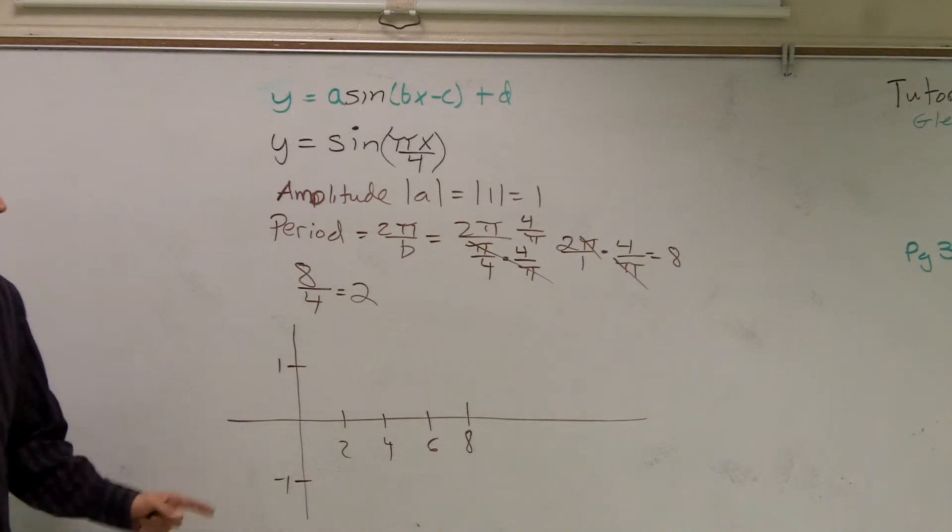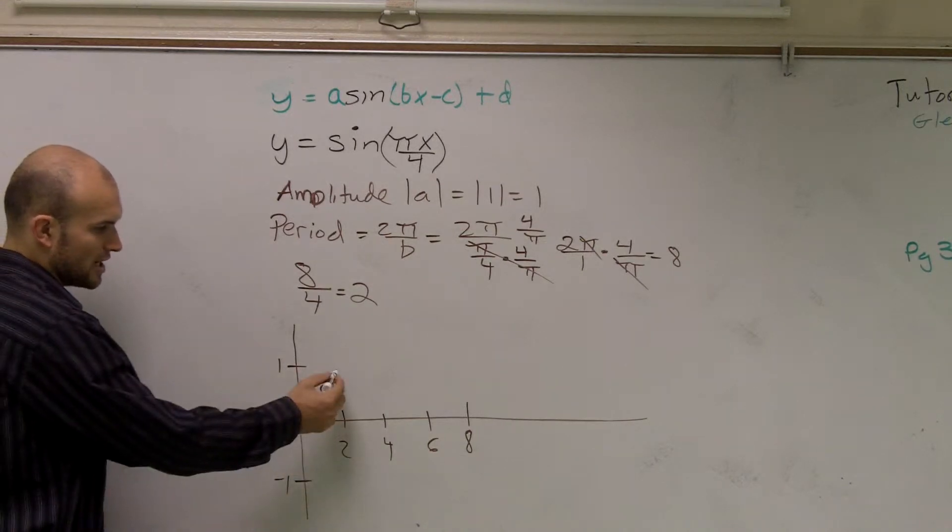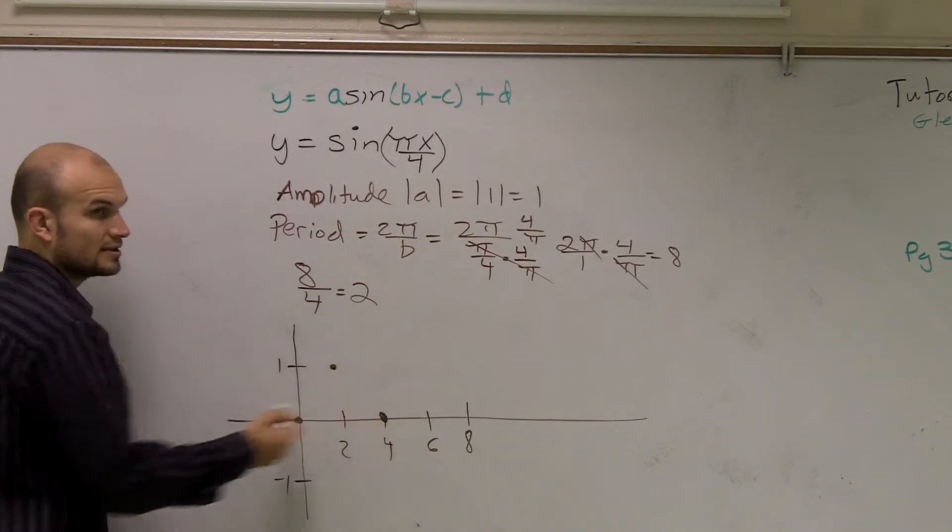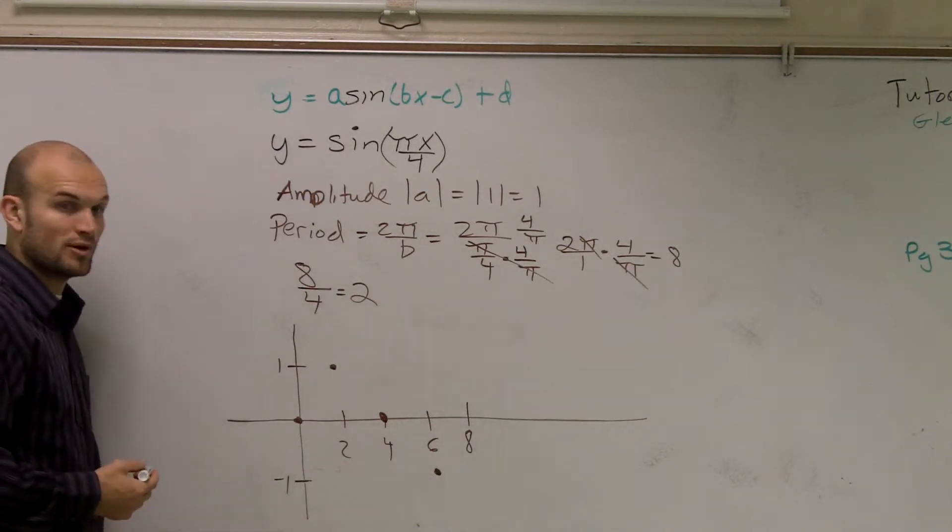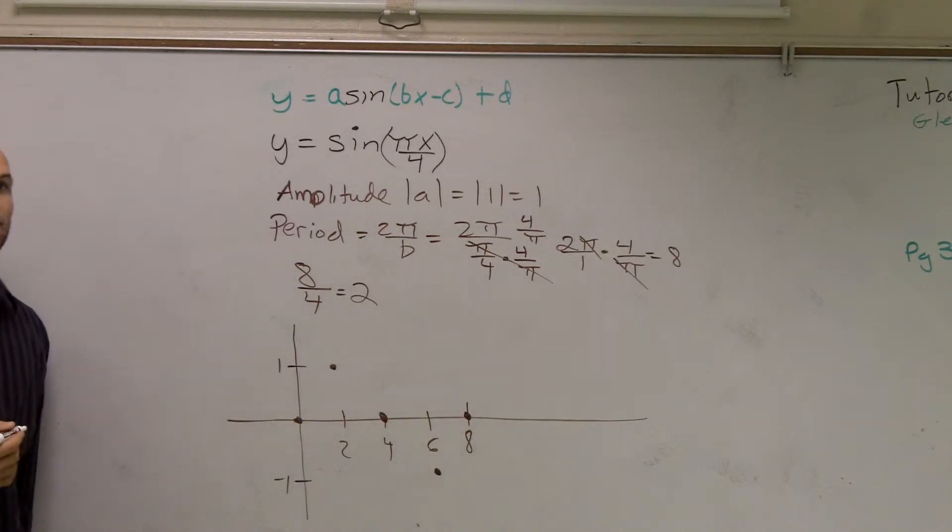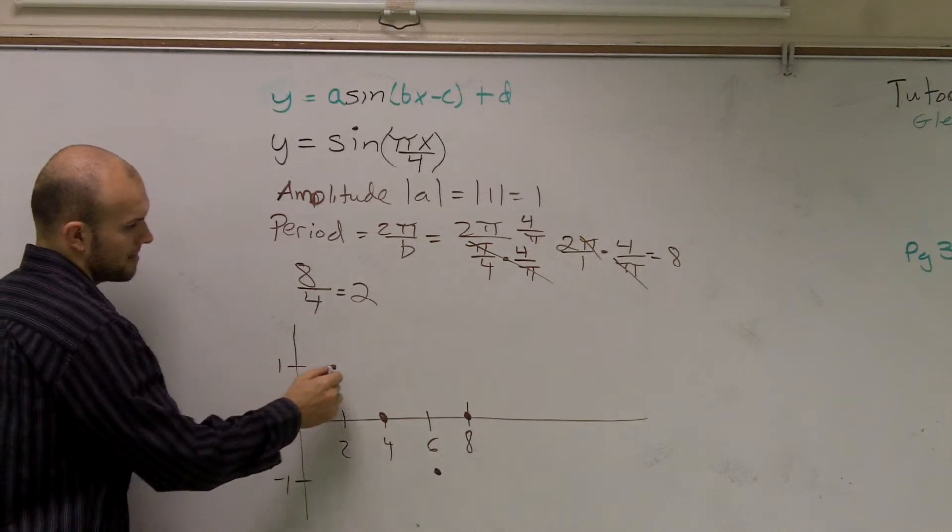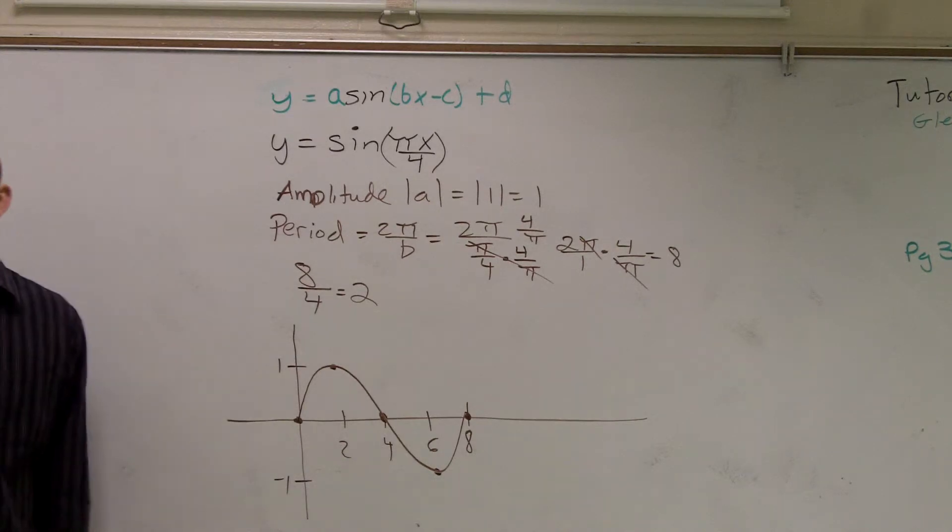So remember, the sine graph crosses at the x and y intercept. Then it goes up to its maximum at the first important point, crosses the x intercept at the second important point, has its minimum at the third important point, and ends its cycle, ends its first cycle at the fourth important point. You guys see why it's important to have those four important points for each period? Because then, all I have to do now is sketch it. So that's one period.